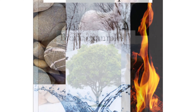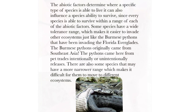The abiotic factors determine where a specific type of species is able to live. It can also influence a species' ability to survive, since every species is able to survive within a range of abiotic factors. Some species have a wide tolerance range, which makes it easier to invade other ecosystems, just like the Burmese pythons that have been invading the Florida Everglades. The Burmese pythons originally came from Southeast Asia, brought here through the pet trade via intentional or unintentional releases. There are also some species that may have a more narrow range, which makes it harder for them to move to a different ecosystem.